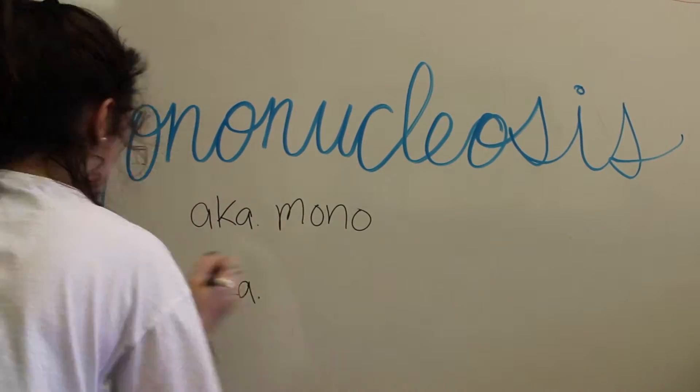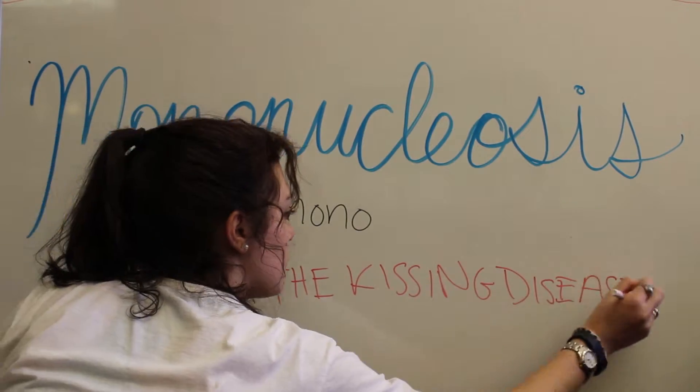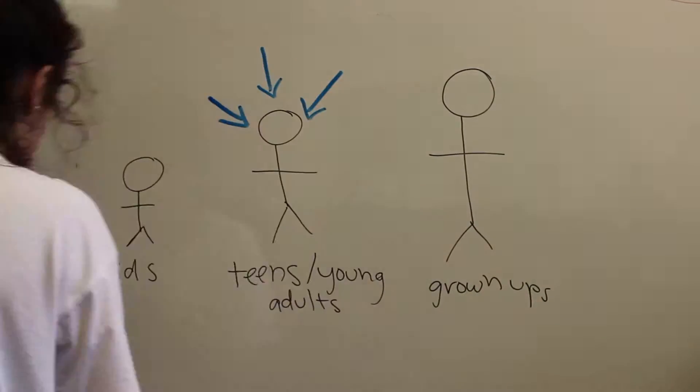Infectious mononucleosis, a.k.a. mono, a.k.a. the kissing disease, is a common viral disease caused by the Epstein-Barr virus. Mono most commonly affects teens and young adults.